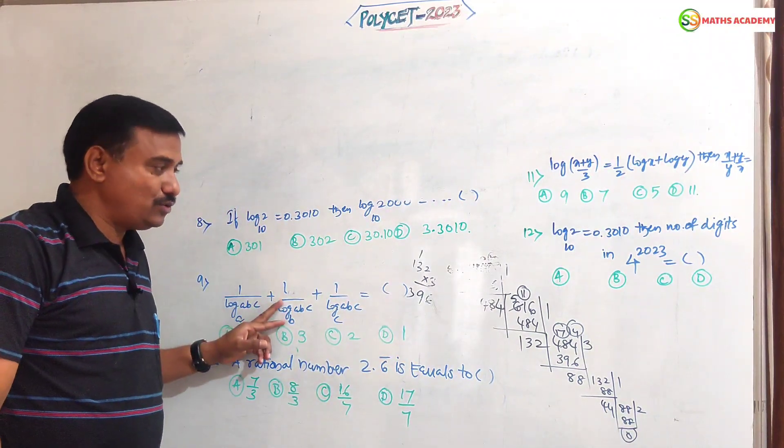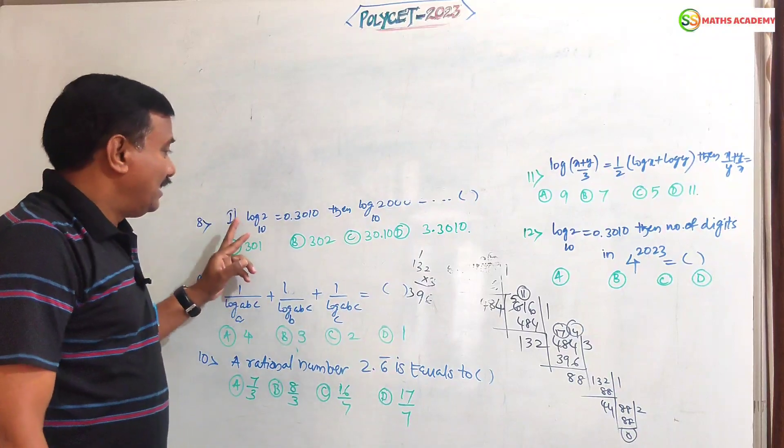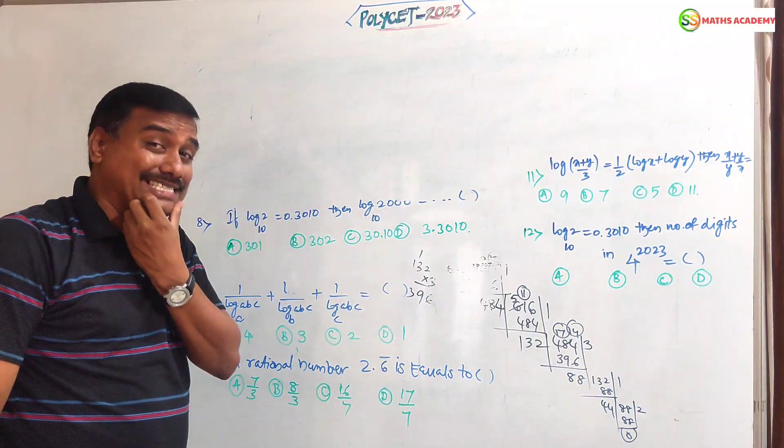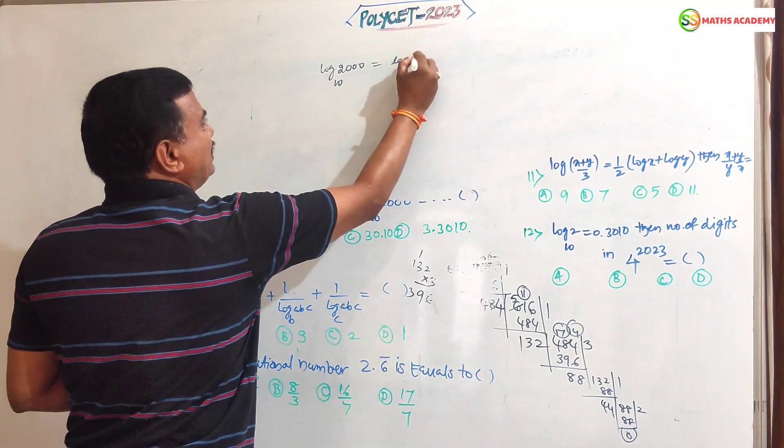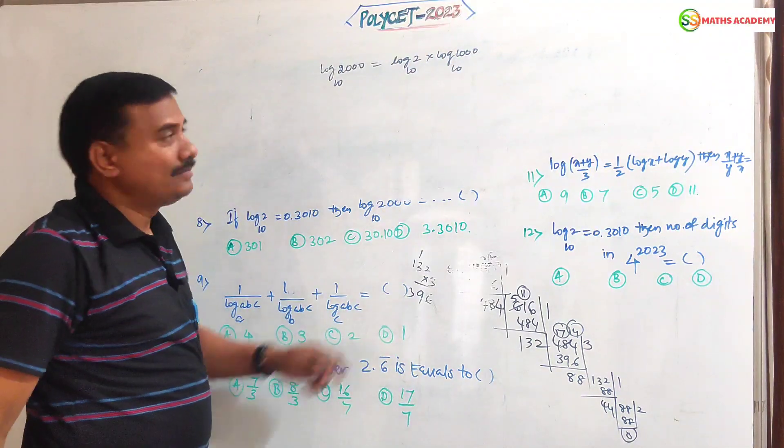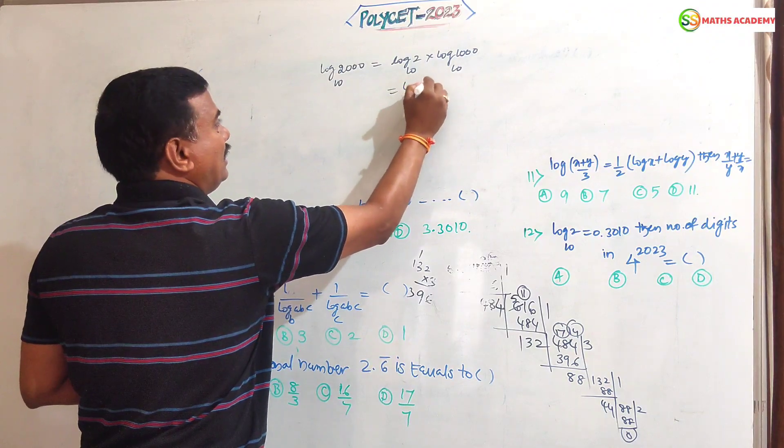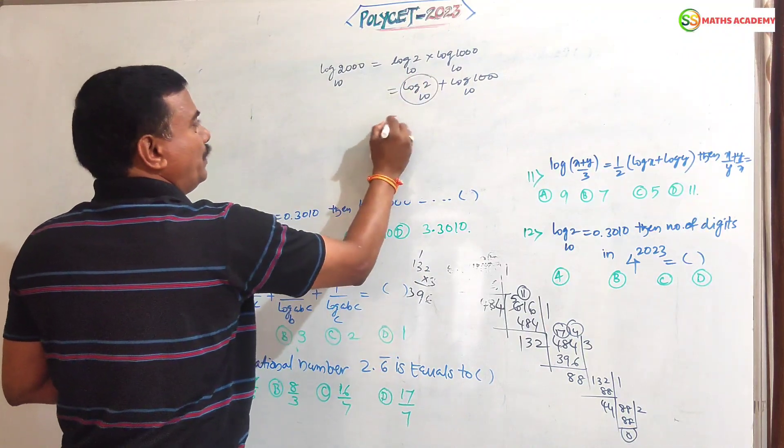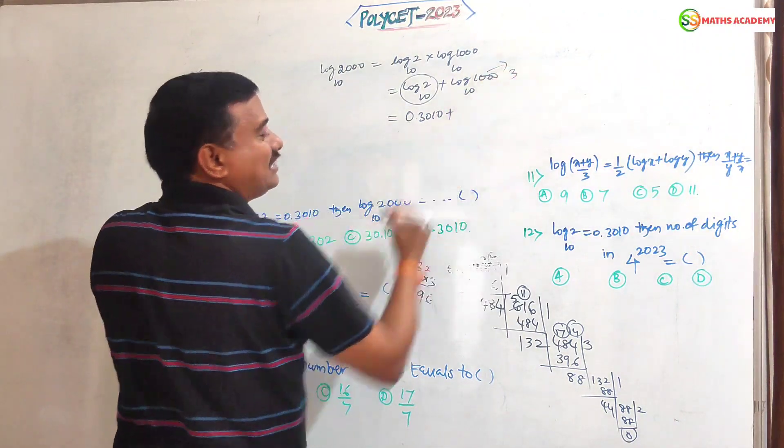Question number 8 in logarithms. If log 2 to the base 10 equals 0.3010, then find the value of log 2000 to the base 10. Simple. Log 2000 to the base 10, we should write 2000 as 2 into 1000, because here log 2 given, we have to write separate. Log A into B formula is log A plus log B. Log 2 to the base 10 is 0.3010. Log 1000, we have to write answer 3 directly.